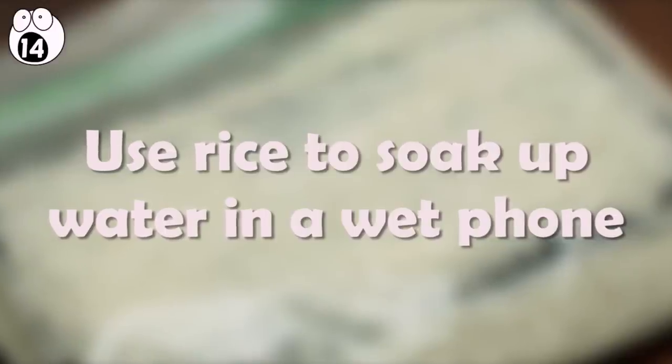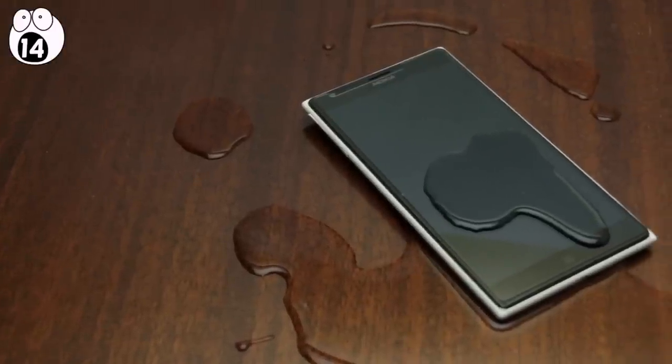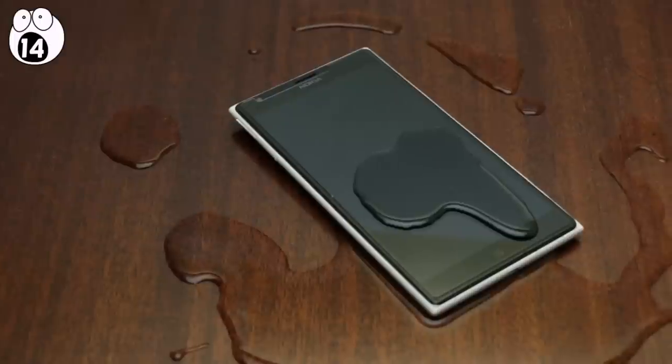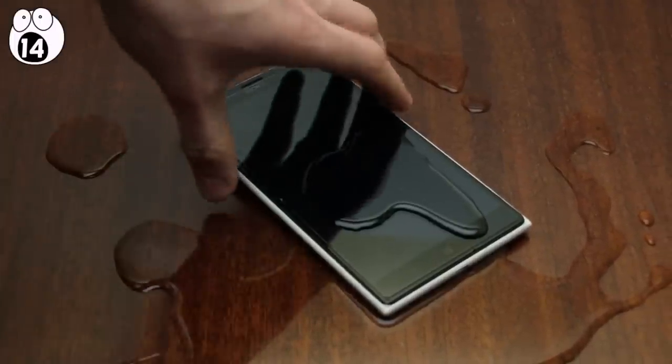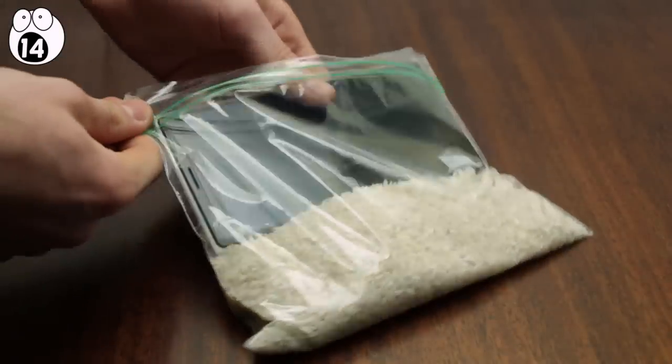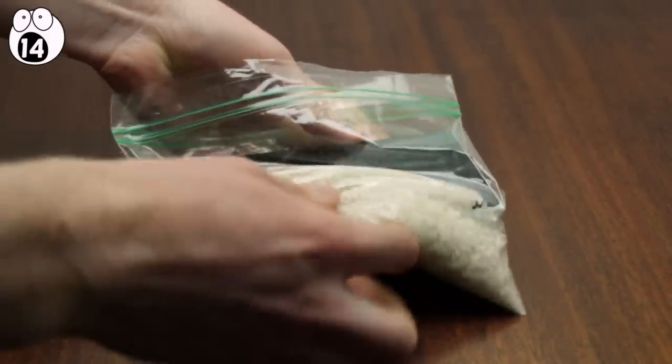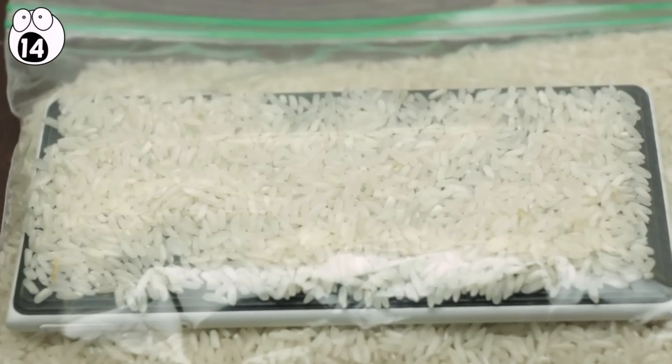Number 14. Use rice to soak up water in a wet phone. This is a terrific trick for those of us whose phones wind up in the most watery of places. If your phone is no longer operational because of an unexpected bath, there is still hope of resuscitation. Place the phone in a bag of uncooked rice overnight. Rice is a mild desiccant, meaning it naturally soaks up water, and hopefully should bring your phone back to life.